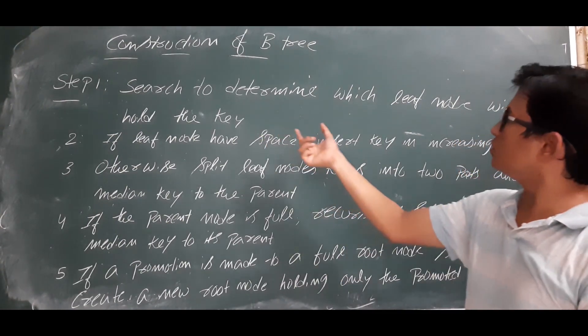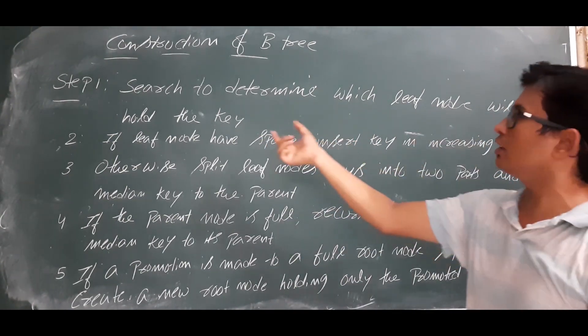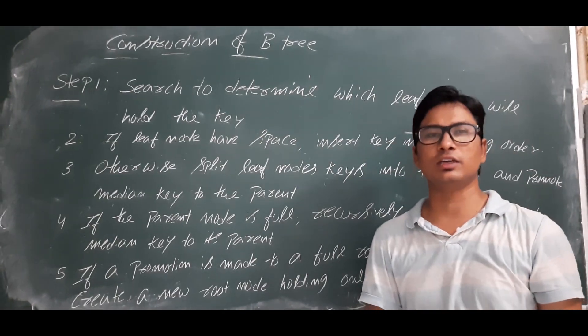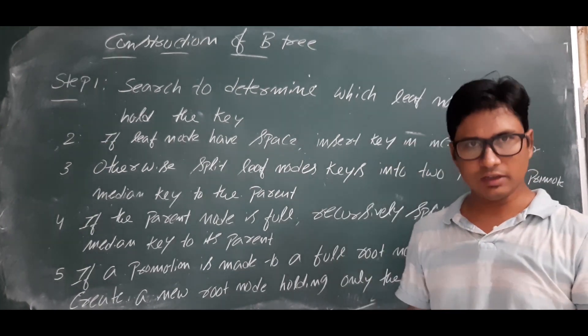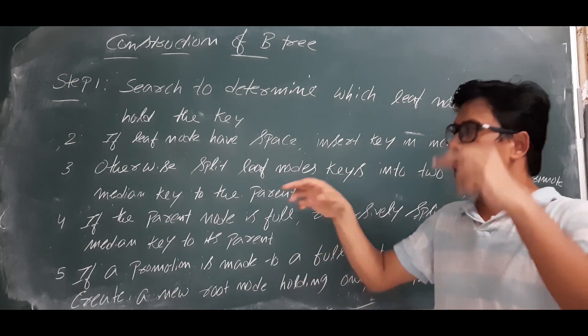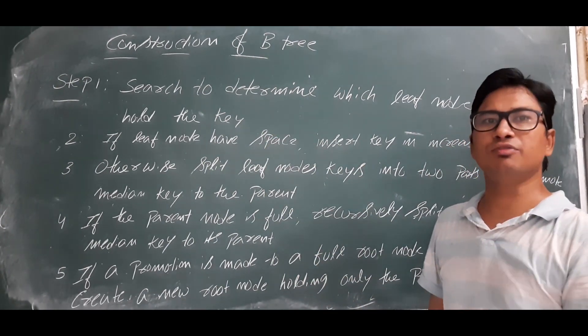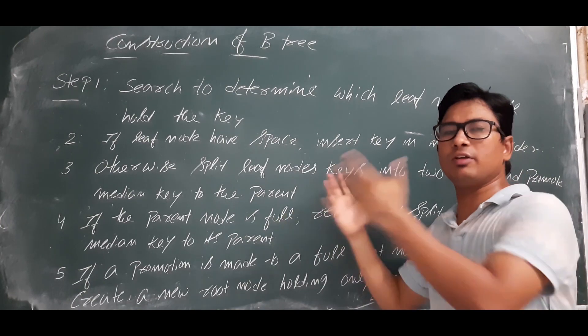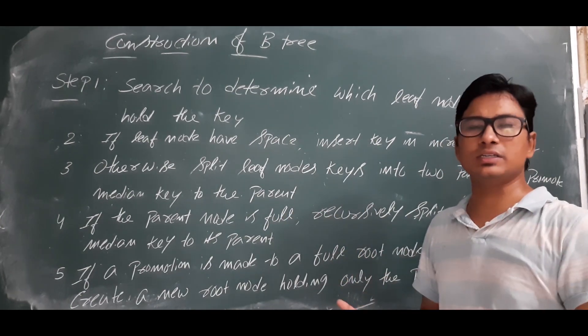Step 1: Search to determine which leaf node will hold the key value. Suppose you need to insert the value 5, you need to find in which leaf node you have to place the value 5. That is the first point. You will have n number of leaf nodes where you need to identify in which leaf node you need to insert.